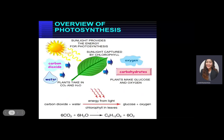At the same time, it also produces six molecules of oxygen (6O₂). As you can see in the illustration, water, carbon dioxide, and sunlight are utilized in the leaves of the plants. The sunlight is captured by the chlorophyll, and the plant takes in carbon dioxide and water, producing carbohydrates — the glucose, or food product of photosynthesis.